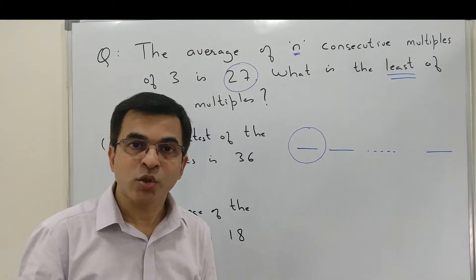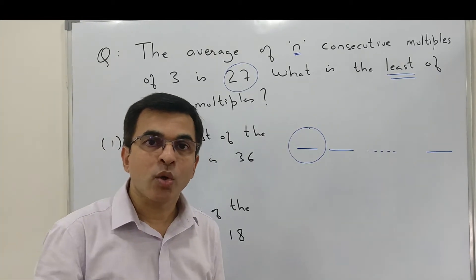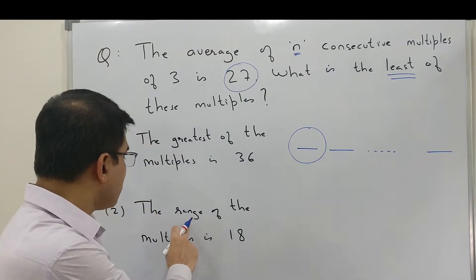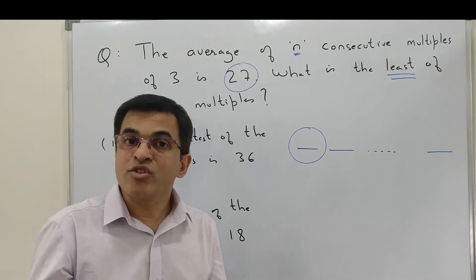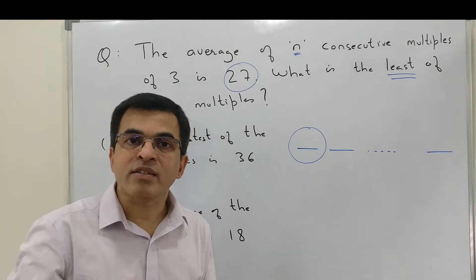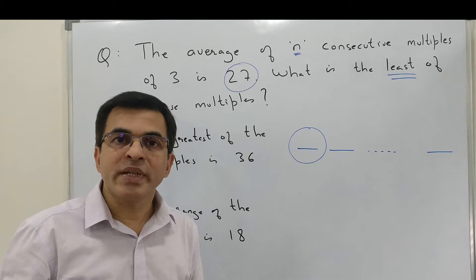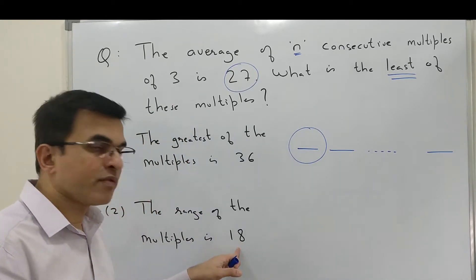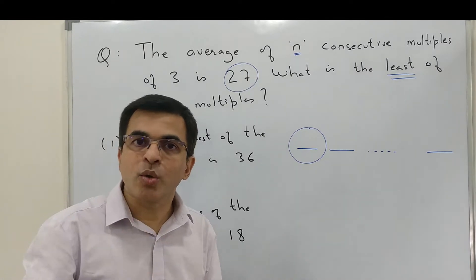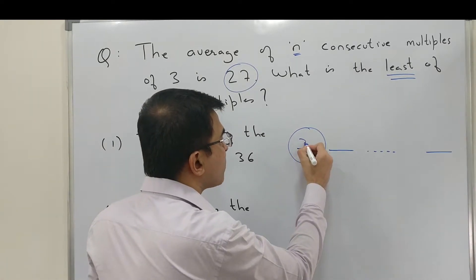Now let's move to statement two alone. Statement two tells us that the range of these multiples - the range of this sequence - is 18. Range is nothing but highest minus lowest, which also means that the highest term in the sequence is 18 more than the lowest term.